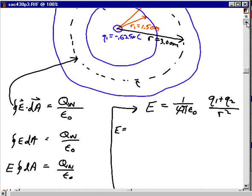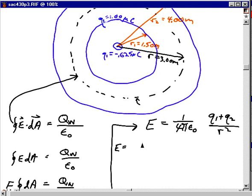E is equal to, I might need a little more room for that, but 1 over 4 pi times 8.85 times 10 to the minus 12 coulomb squared per newton meter squared.